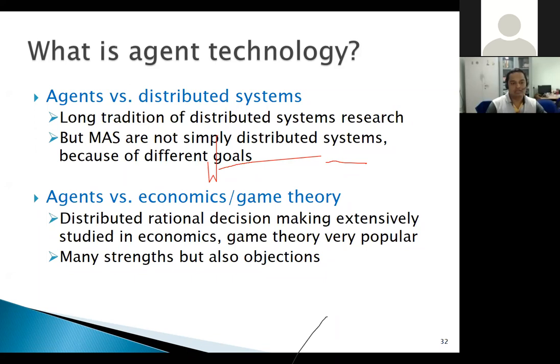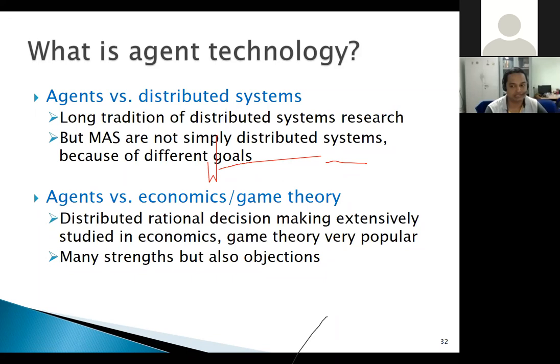Regarding agents versus economy and game theory: game theory, which has applications in economics and computer science, allows agents in multi-agent systems to think rationally. While agents interact with each other to achieve some common goal or objective, the game theory model allows these agents to make rational decisions in a distributed setting.